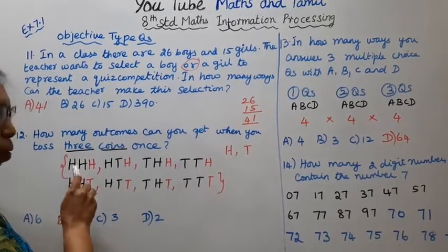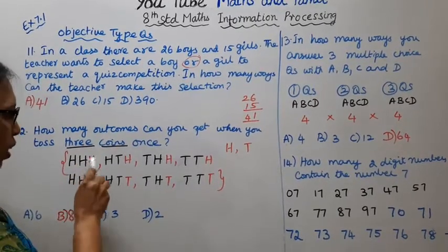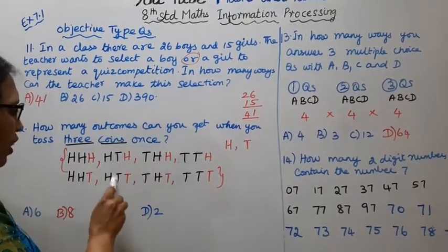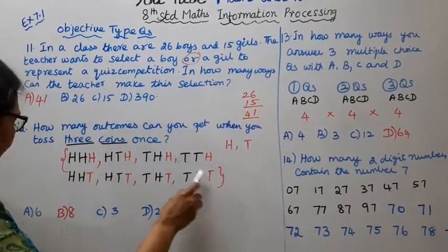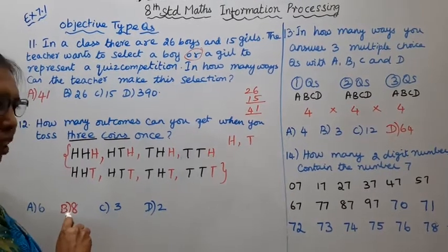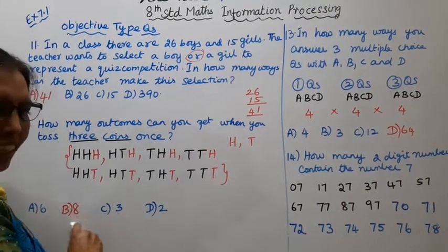Counting the outcomes: 1, 2, 3, 4, 5, 6, 7, 8. So the answer is option B — 8 outcomes.